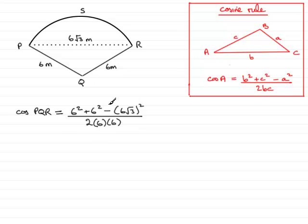If you work that out on your calculator, you should get -0.5. To find the angle PQR, we take inverse cosine of both sides, so PQR equals cos⁻¹(-0.5).